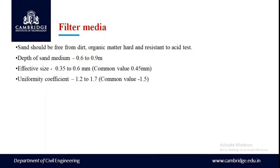The filter media — generally sand is used as filter media here. The depth of the sand medium will be taken as 0.6 to 0.9 meters. The effective size of the sand will be taken as 0.45 mm, and it should be in the range of 0.35 to 0.6 mm. The uniformity coefficient is taken as 1.5 but generally it should be in the range of 1.2 to 1.7.